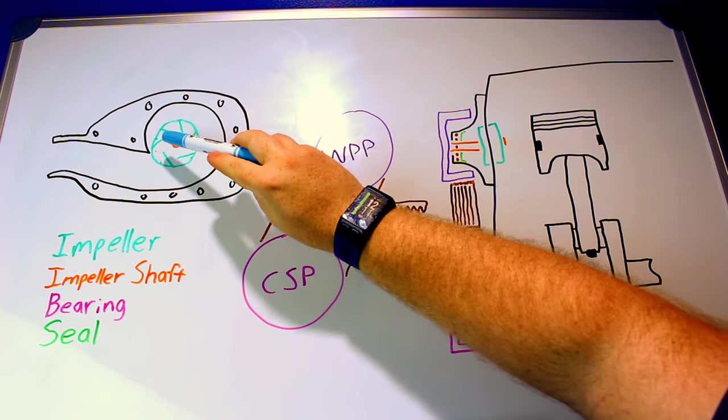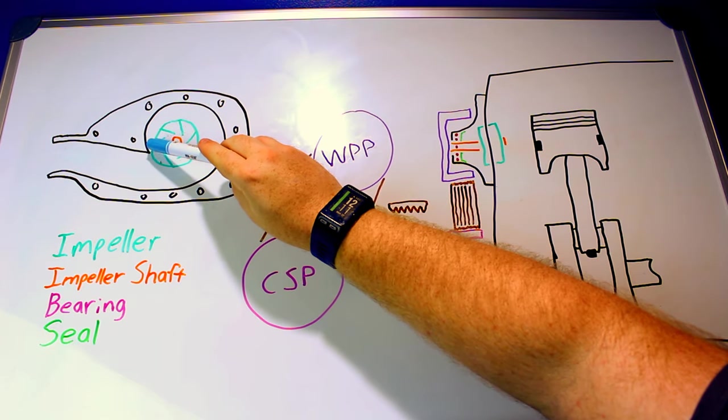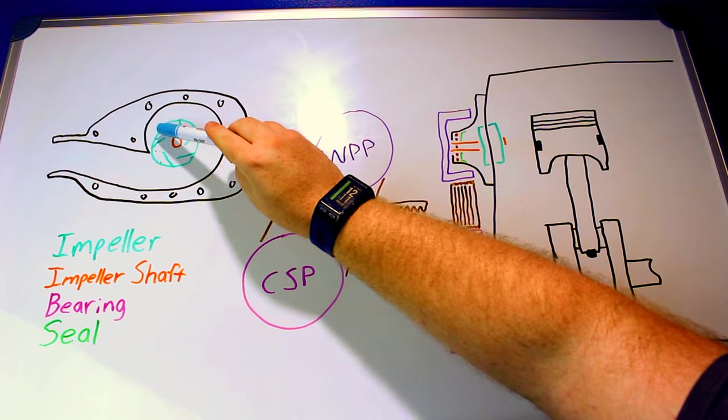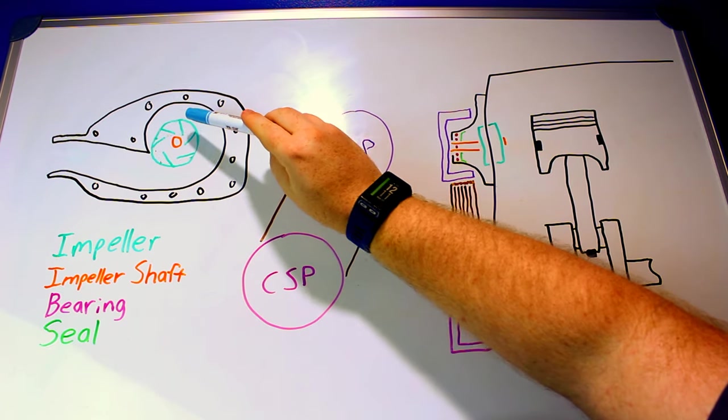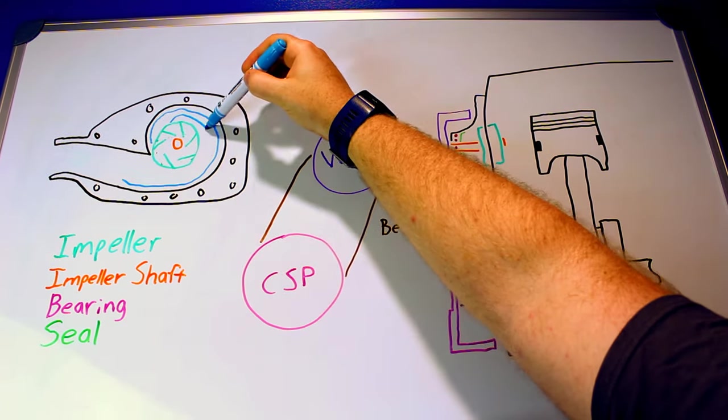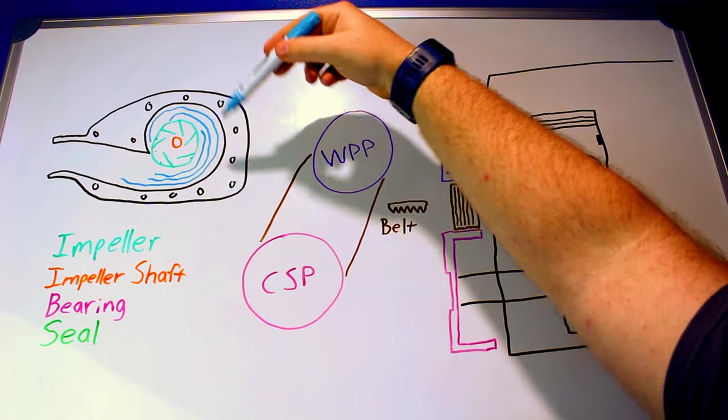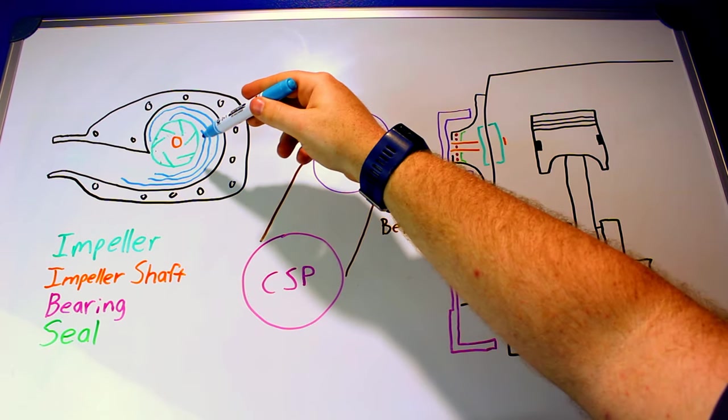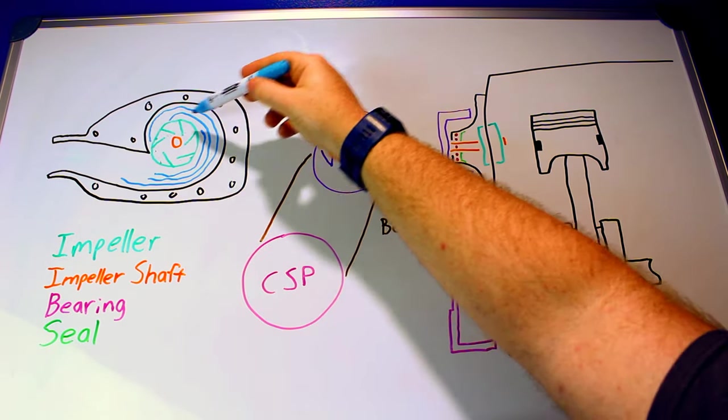And that's just to allow all sides of this impeller to do work because water will come out here and then as you go this way more water is being added, more water is being added. And it's not going to do exactly this there's going to be a lot of turbulence that's going to mix up but you get the idea.